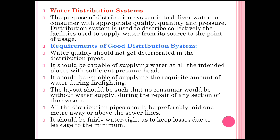The next concept is the water distribution system, which is the last part of this chapter. The purpose of the distribution system is to deliver water to consumers with appropriate quality, quantity, and pressure. A distribution system collectively describes the facilities used to supply water from its source to the point of use. The requirements of a good distribution system are: water quality should not deteriorate in distribution pipes; it should be capable of supplying water at all intended places with sufficient pressure head; it should be capable of supplying the required amount of water during fire fighting; and the layout should be such that no consumer is without water supply during repair of any section.